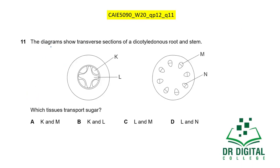In this question, the diagram shows a transverse section of a dicotyledonous root and stem. In the root, the central region has star-shaped xylem, and K is the phloem. In the stem, the inner tissue is xylem and M is the phloem. The question asks which tissues transport sugars. Transport of sugars is the job of phloem. So K and M are both phloem, and the answer is A.